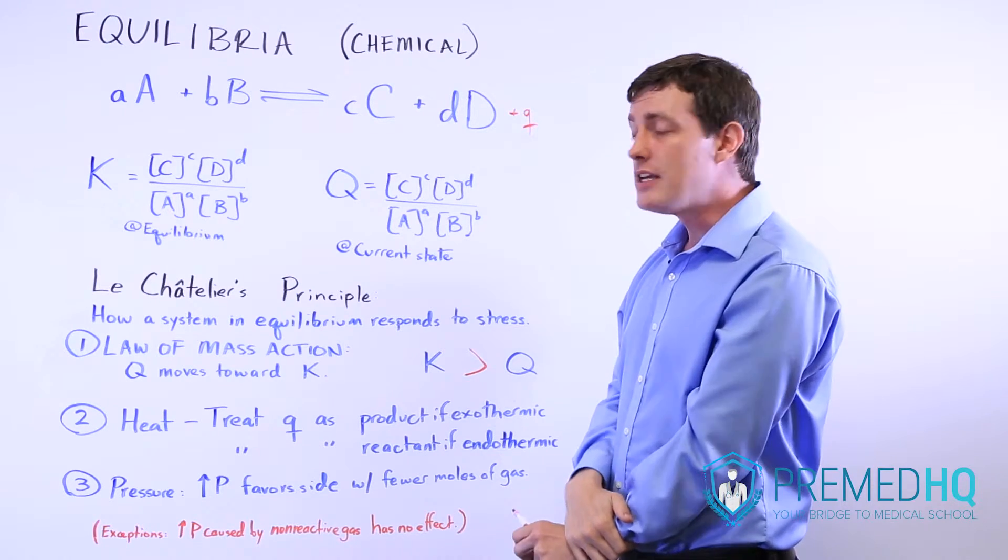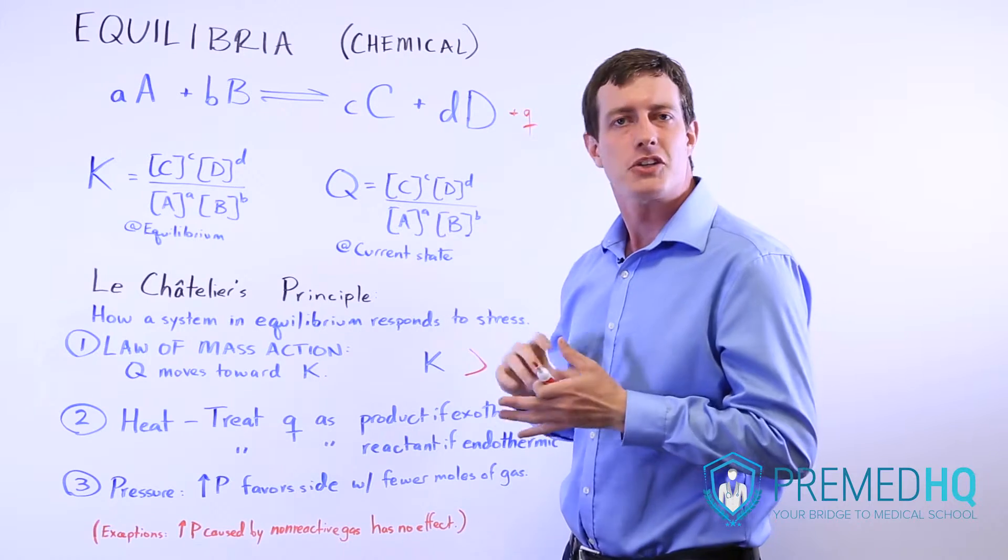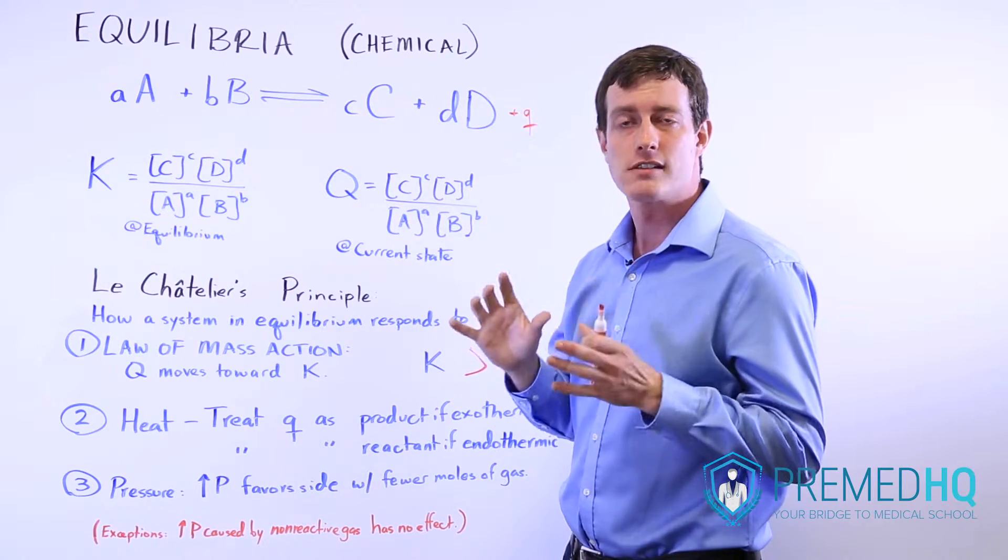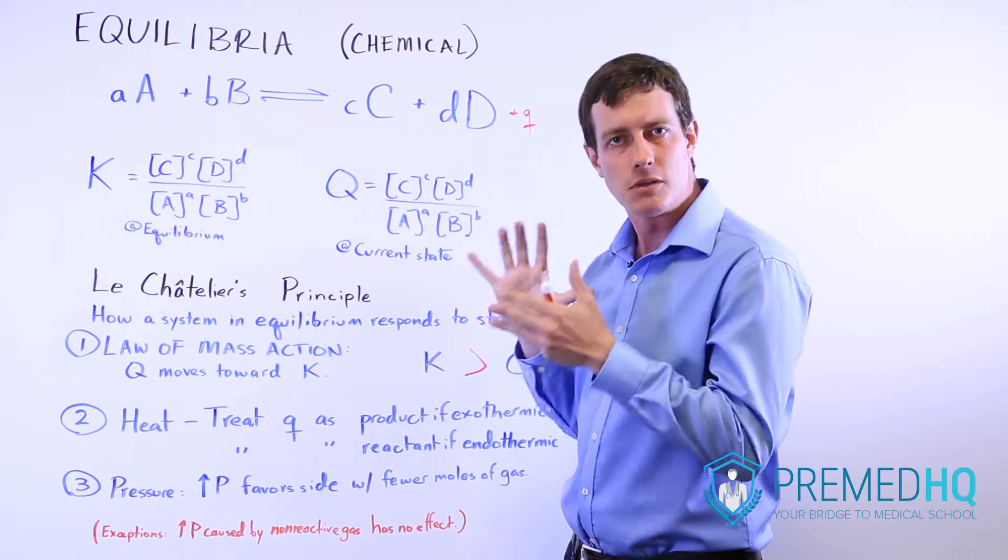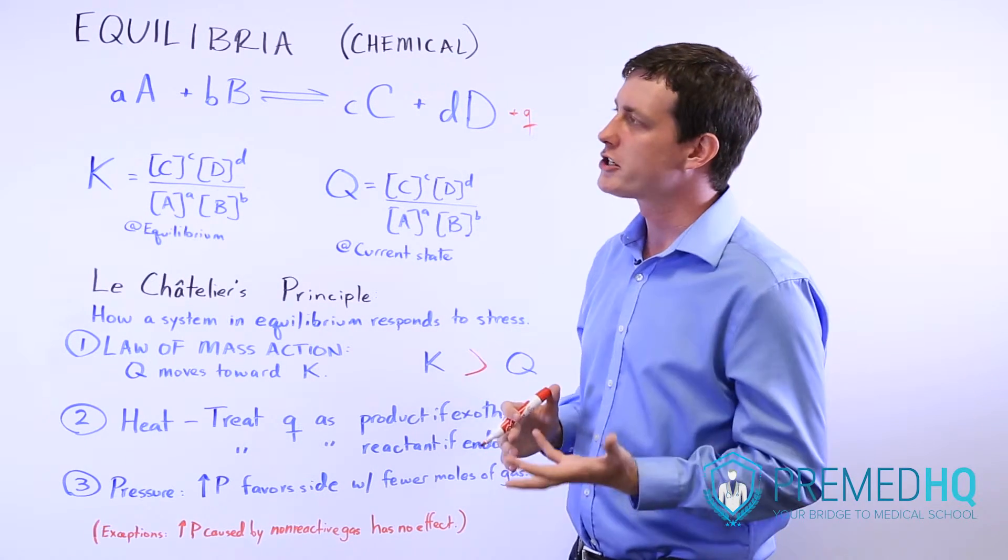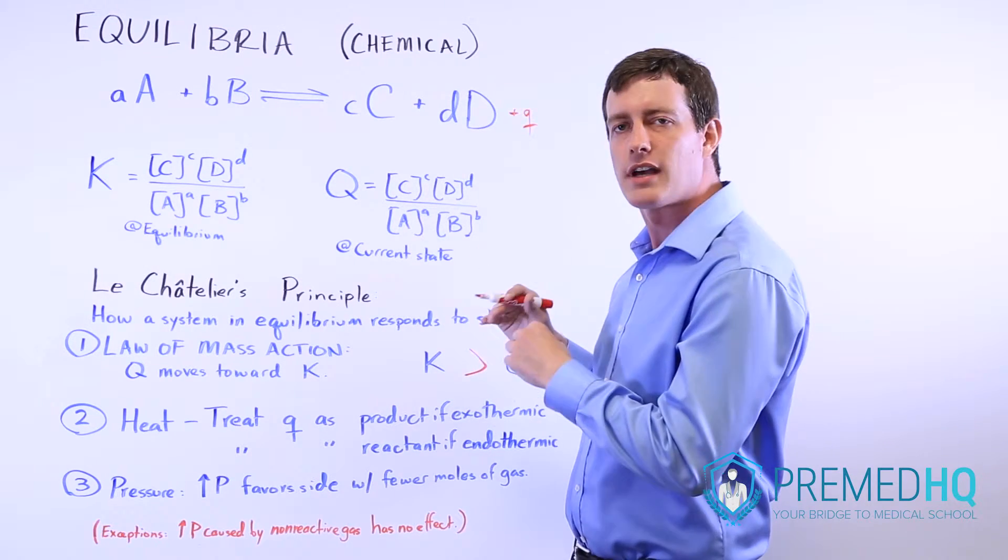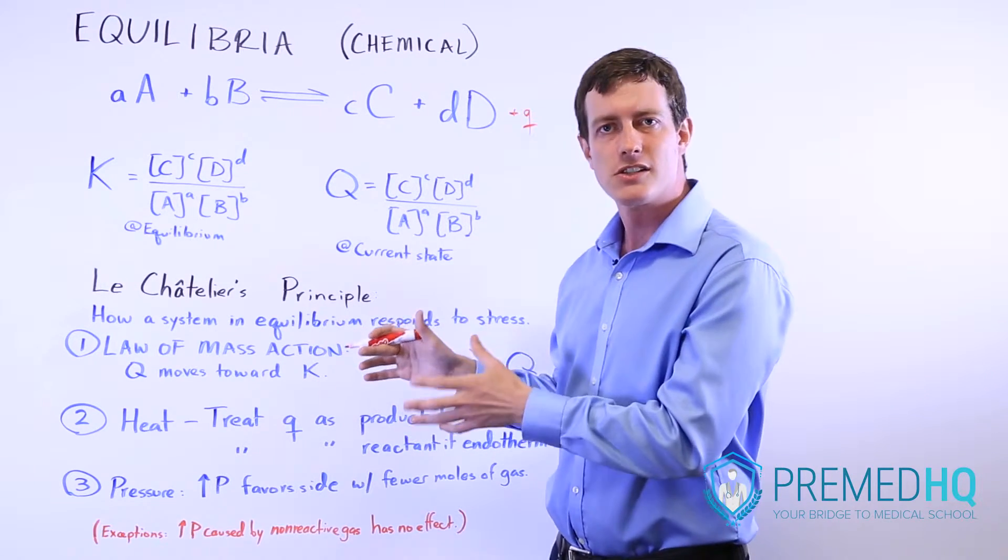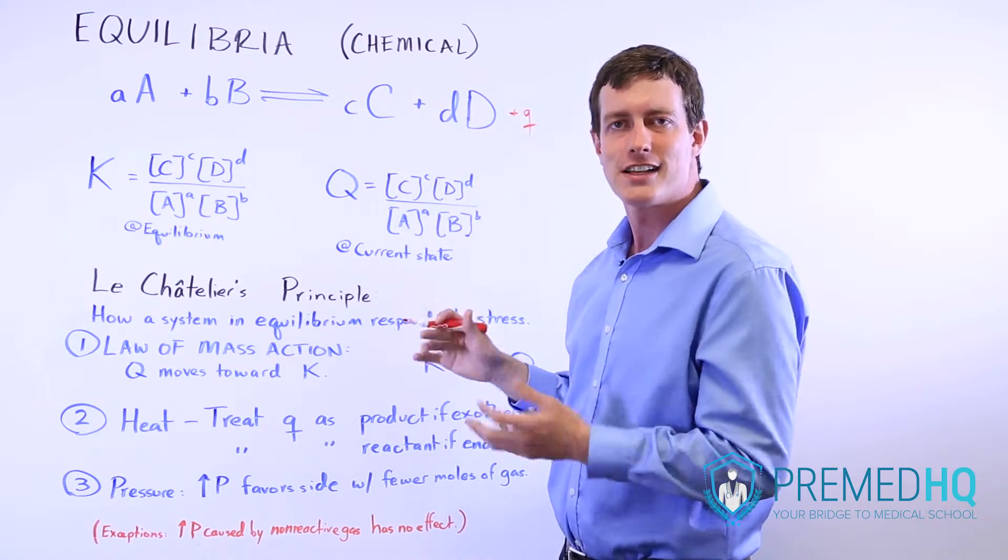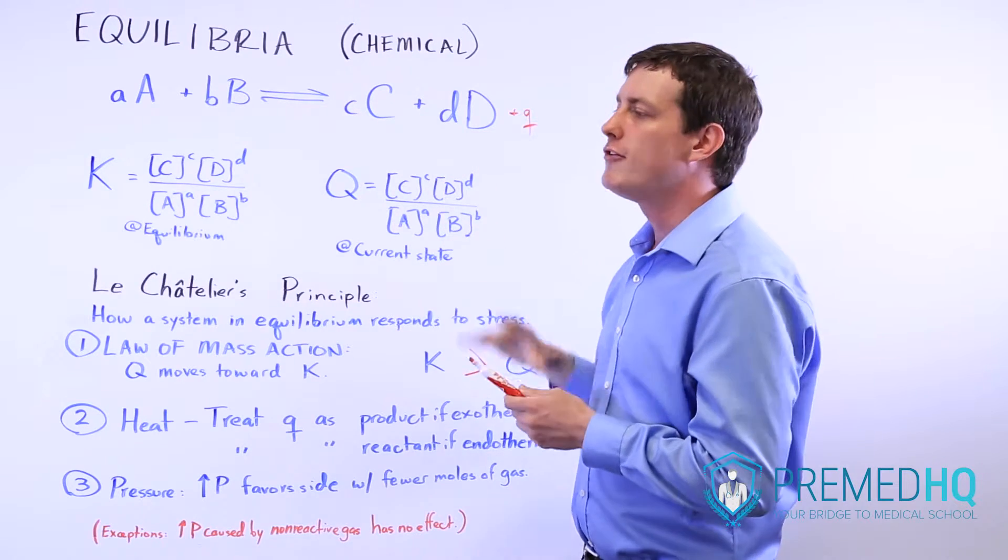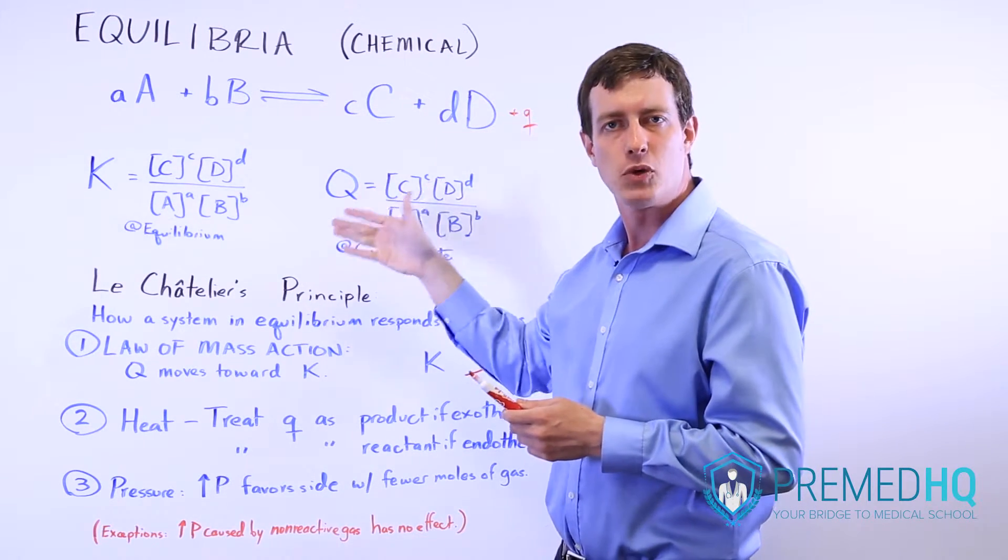The third piece of Le Chatelier's is pressure. Remember that if you increase pressure, that imposes a lot of stress on gases, because gases are very responsive to pressure. And an increase in pressure has the effect of moving the reaction toward the side with fewer moles of gas. So whichever side of this equation had fewer moles of gas in the balanced equation, if you increase the pressure, that reaction will move toward the side with fewer moles of gas.